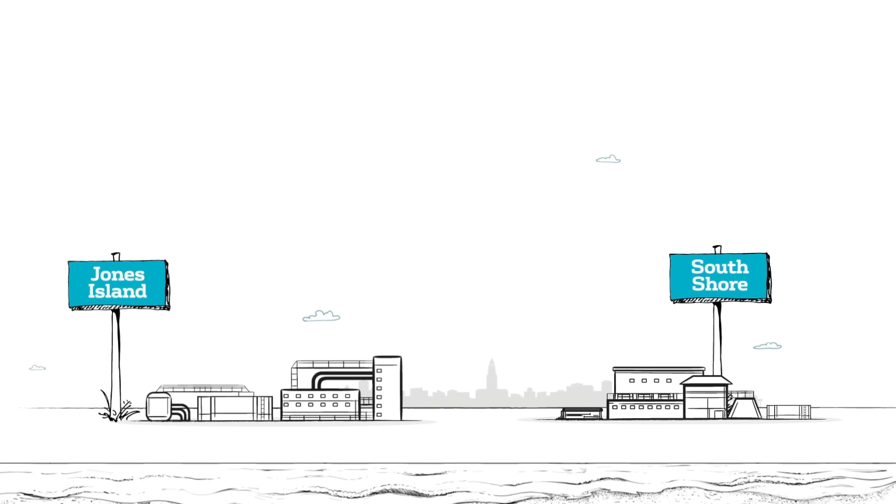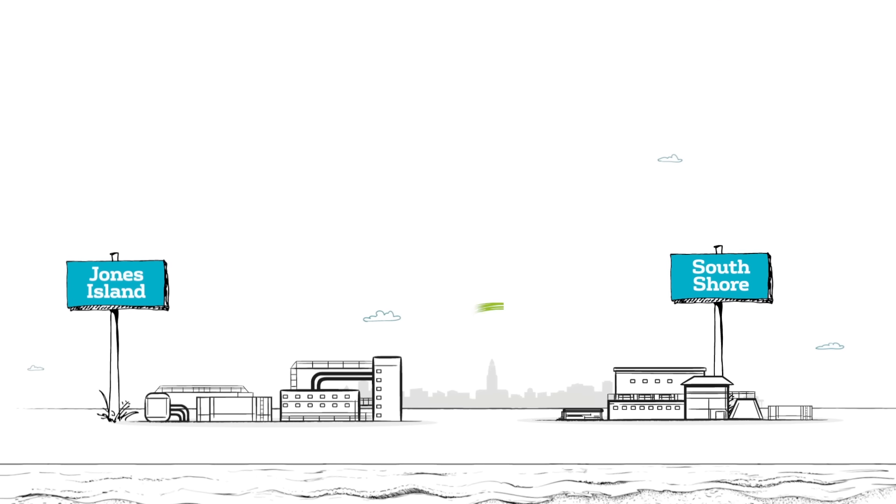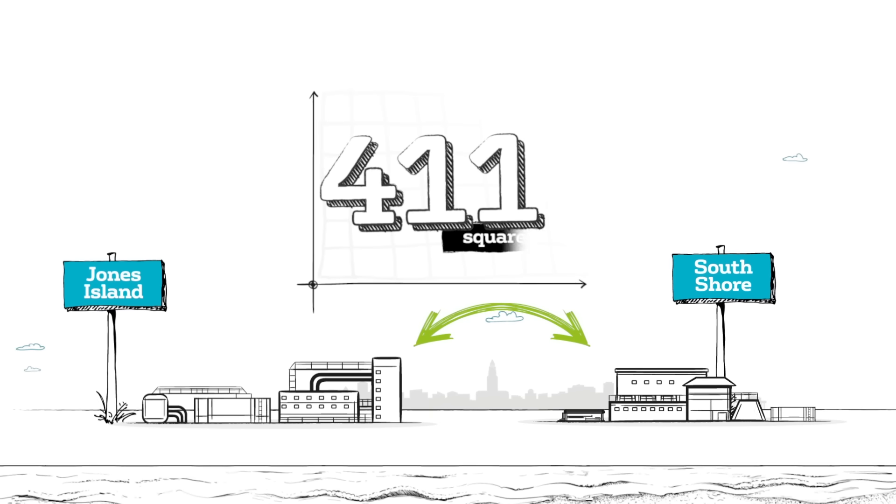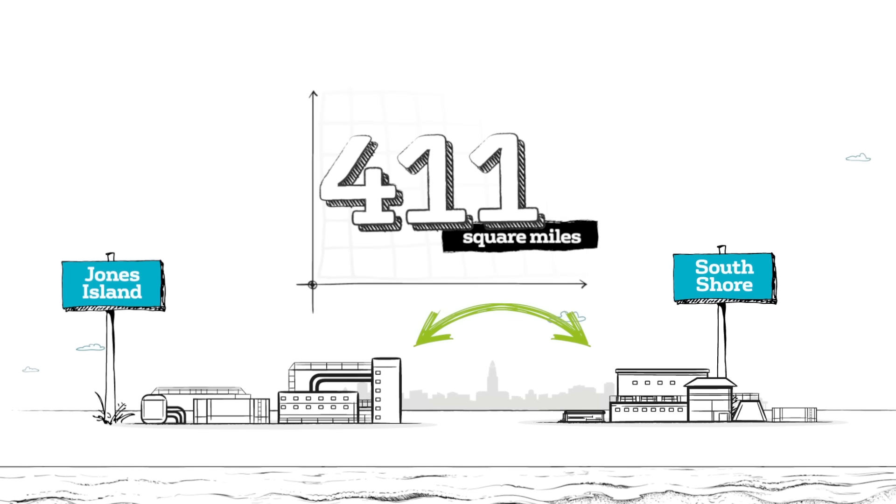On the banks of Lake Michigan, two plants—Jones Island and South Shore—work together to serve the district, which covers 411 square miles.